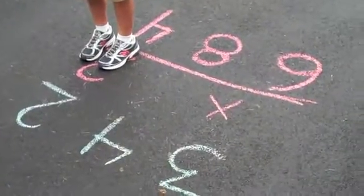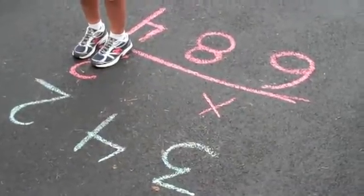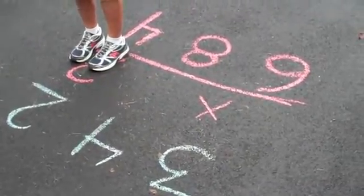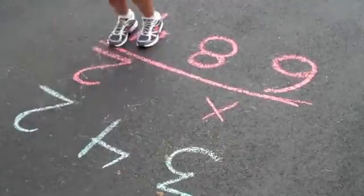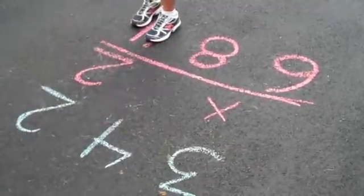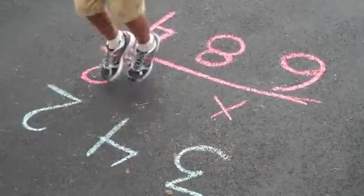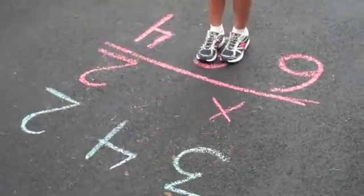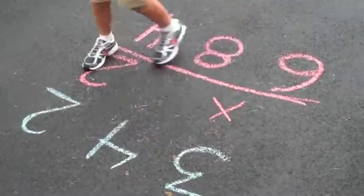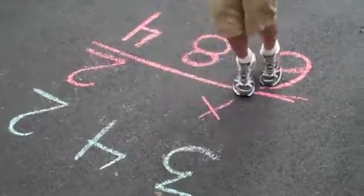Okay. Let's see you do that multiplication problem. Three hundred forty-two times two. Two times two is four. Two times four is eight. Two times three is six. Nice job.